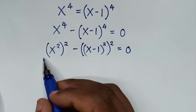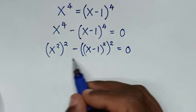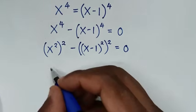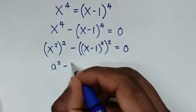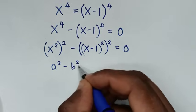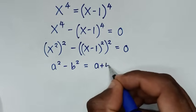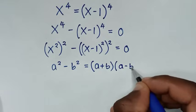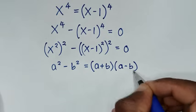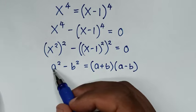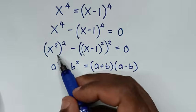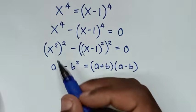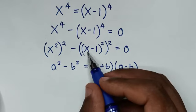Now the left side is in the form of a difference of squares. We apply the rule a squared minus b squared equals a plus b bracket times a minus b bracket. Here a squared is x squared bracket squared, so a is x squared.